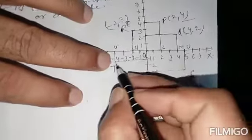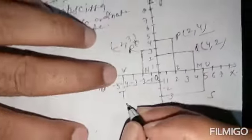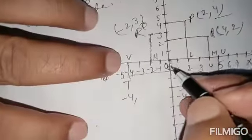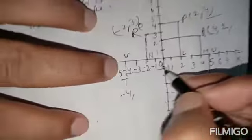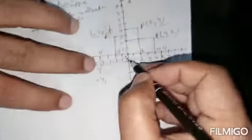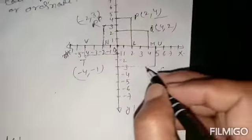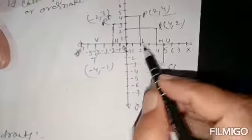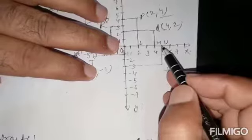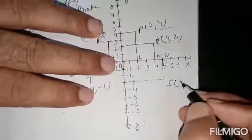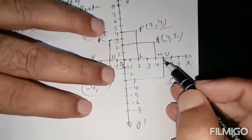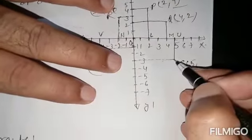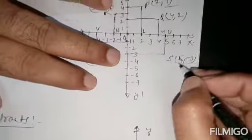Coordinates of point T: the perpendicular distance from the Y-axis is OB, which is minus 4, and the perpendicular distance from the X-axis is minus 1. So coordinates of point T are (minus 4, minus 1). Coordinates of point S: the perpendicular distance from the Y-axis is OM, which is 5, and the perpendicular distance from the X-axis is minus 3. So coordinates of point S are (5, minus 3).